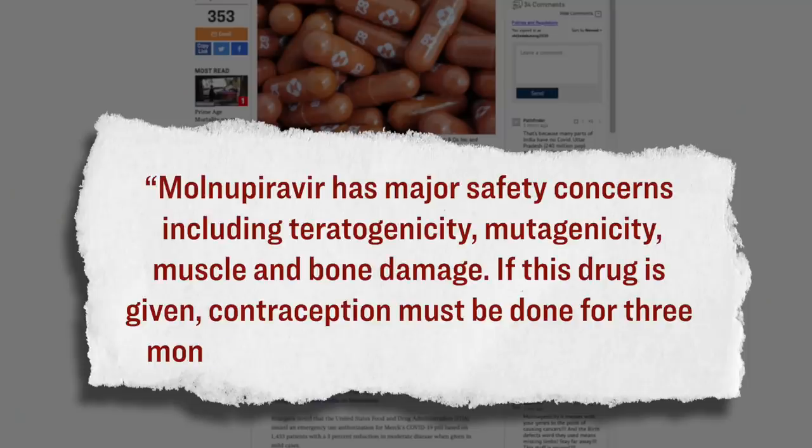Here's specifically what the director general of this agency said in a statement. Molnupiravir, which is the name of Merck's COVID pill, has major safety concerns, including teratogenicity, which are defects in a developing fetus, mutagenicity, which is a permanent and transmissible change in the structure of a person's genetic material, as well as muscle and bone damage. If this drug is given, contraception must be done for three months as the child may have problems. Those are obviously very serious concerns. Let's back up for a quick moment and I'll give you a bit of background on this COVID pill, which is particularly important given the fact that it is currently authorized to be used here in America.